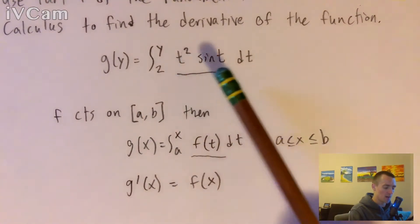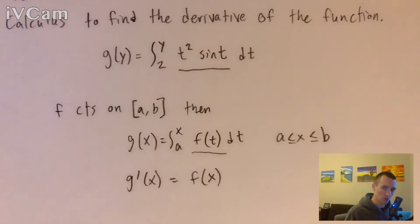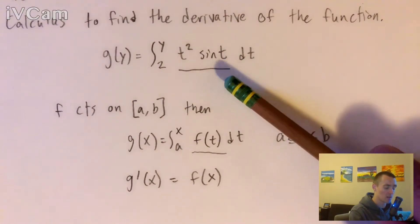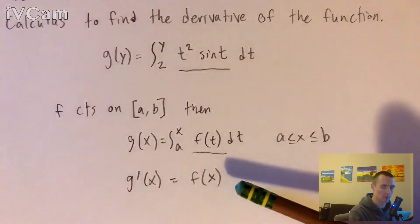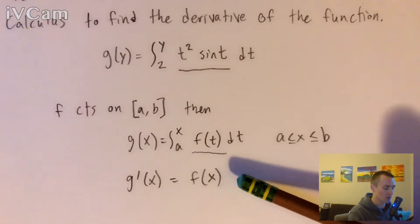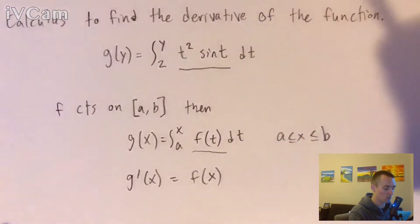t squared and sine of t are both continuous everywhere. So as a result, the product of those two things would be continuous everywhere as well. So since we know this function within this integral here is continuous everywhere, we can basically say that this fundamental theorem of calculus part one will hold up no matter what a and b we pick. So what that means is, if we're trying to find the derivative of this function, we're trying to find g prime of y.